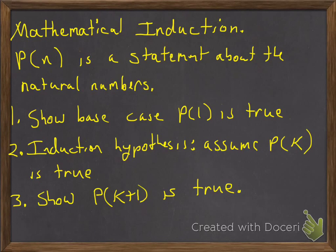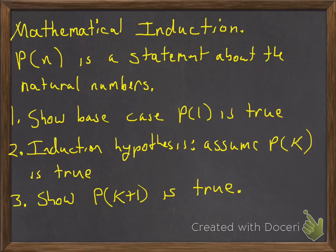We're going to look at a couple examples of mathematical induction. We're going to try to make this simple. P of n is a statement about the natural numbers. What we want to do is show that for n equals 1 — that's called the base case — we want to show that whatever formula it is, it's true for n equals 1.